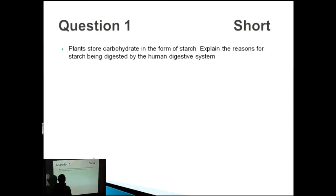Let's look at this question which is one of the questions from topic 3.2. Plants store carbohydrates in the form of starch. Explain the reasons for starch being digested by the human digestive system. So they're talking about the fact that starch is a complex carbohydrate, is a large molecule.